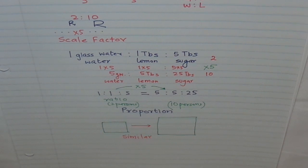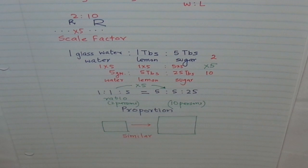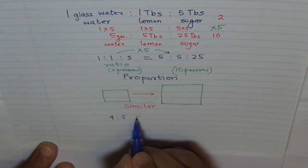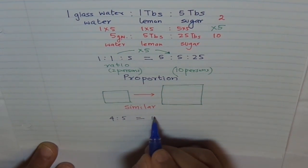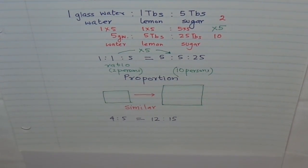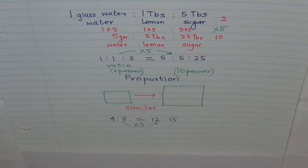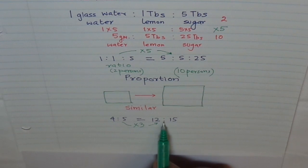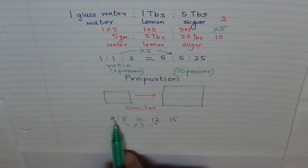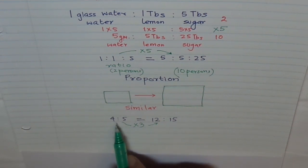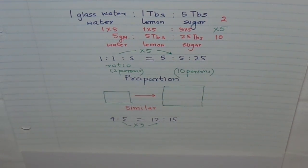To summarize: if I write 4 is to 5, that is a ratio. If we multiply by 3, we get 12 is to 15 — the scale factor is 3. The result is an equivalent ratio. That equal sign between them shows they are equivalent, and both together in equation form reflect a proportion — they are similar. That is how ratio, scale factor, and proportion are related.